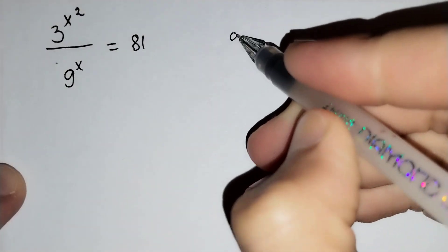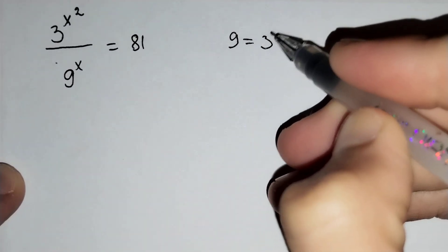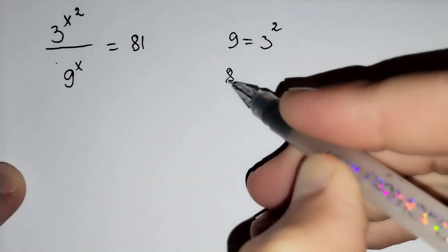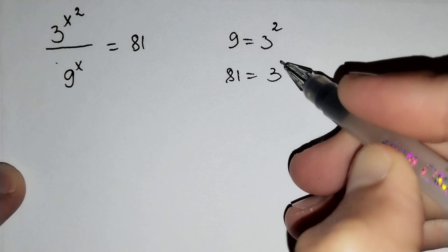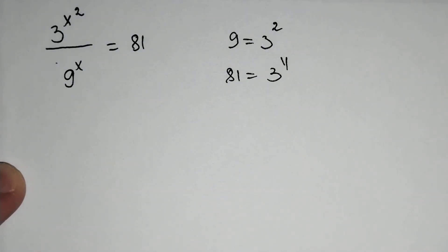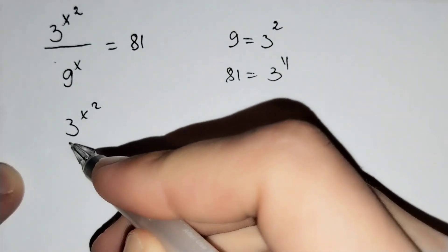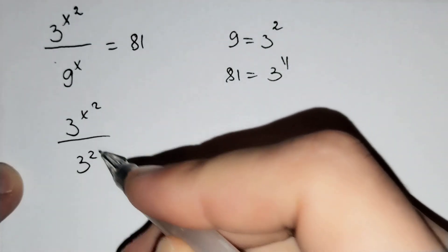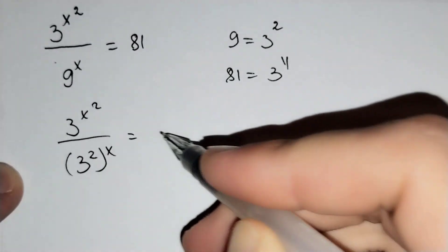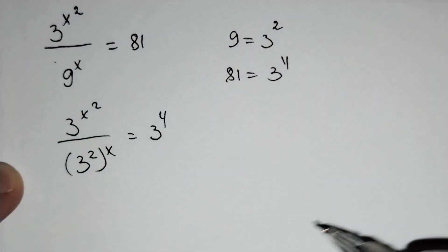Firstly we know that 9 equals 3 squared and 81 equals 3 power 4. Then let's put this here: 3 power x squared over 3 power 2 power x equals 3 power 4.